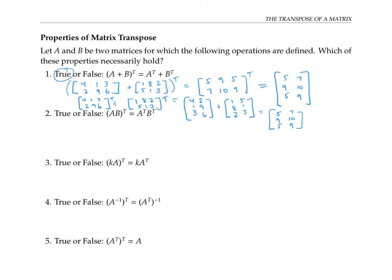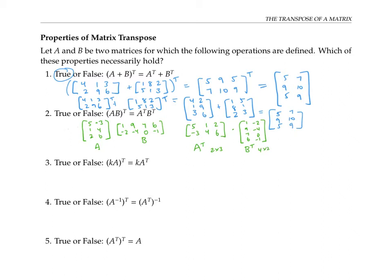What about the next property — is (AB) transpose the same as A transpose times B transpose? Well, thinking about dimension, just because A times B makes sense dimension-wise doesn't guarantee that A transpose times B transpose will even make sense. Here it doesn't, because we can't multiply a two by three matrix times a four by two matrix. And even if we stick with square matrices so dimensions aren't a problem, it's still easy to come up with counterexamples.